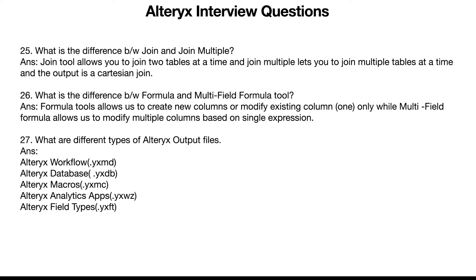Join multiple — in the join tool you are allowed to join only two tables at a time, but here you can join N number of tables. However, the output will always be a Cartesian join. Cartesian join means the number of records of one table multiplied by the number of records of the other table. It combines all the data together whether they match or not, and you can add N number of tables.